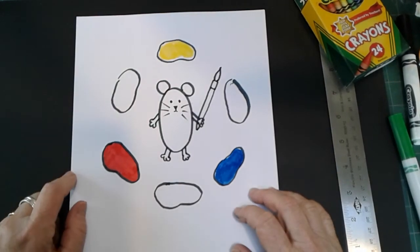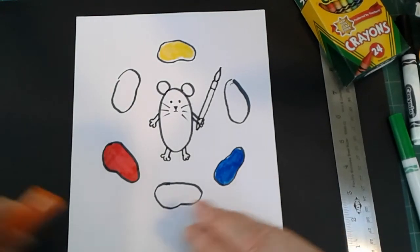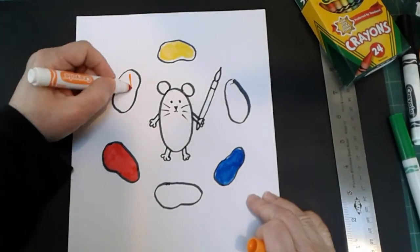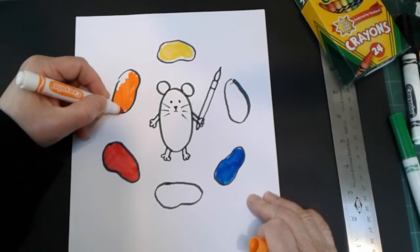What color do you get when you mix red and yellow? If you said orange, you are 100% correct. So here comes our orange.